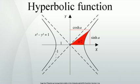Hyperbolic sine and cosine satisfy the identity, which is similar to the Pythagorean trigonometric identity. One also has for the other functions.